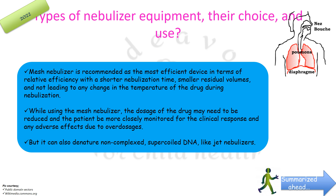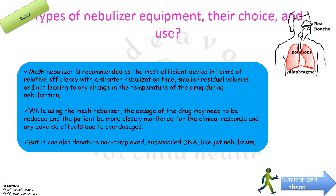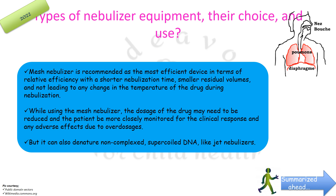The mesh nebulizer is recommended as the most efficient device in terms of relative efficiency, with very short nebulization time, short residual volume, and no change in drug temperature during nebulization. However, when using a mesh nebulizer, the dosage may need to be reduced and the patient monitored more closely for clinical response and adverse effects due to overdosage, given its high efficiency. It can also denature non-complex supercoil DNA, as jet nebulizers do.